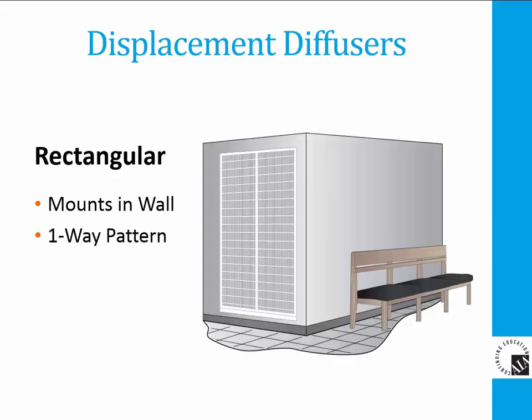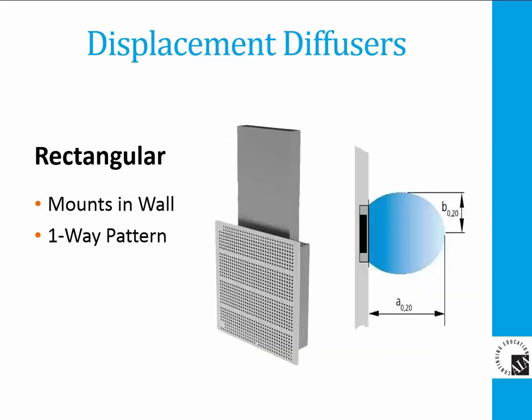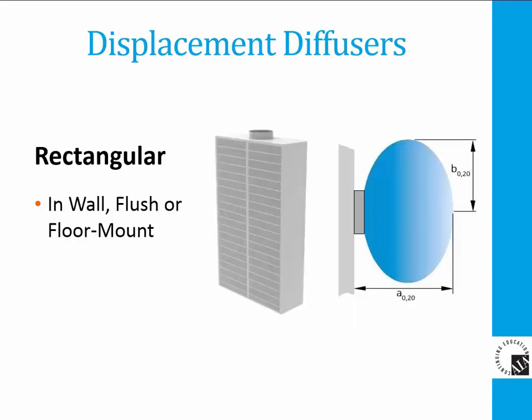Some displacement diffuser units serve large spaces at higher airflow rates and are very tall, taking up a large space. One unit can mount inside a wall cavity, discharging air into the room outward in a one-way air pattern. Another unit can mount in the wall or in front of the wall, with air still discharged outward in the front only in a one-way discharge air pattern.